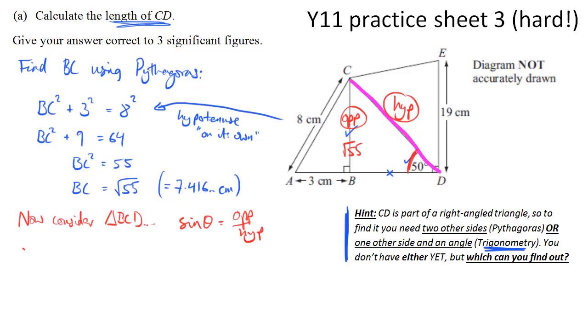And then we simply put in the values that we've got. So our angle is 50. So sine 50 degrees equals the opposite, which we know is root 55, divided by the hypotenuse, which is CD.